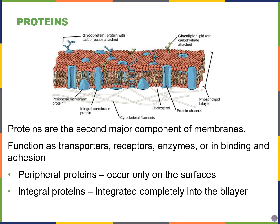Proteins are also an important component of membranes. They will have a variety of functions, including transporters that move things across the membrane into or out of the cell, protein receptors that bind to hormones to signal the cell to perform some kind of function, enzymes that speed up reactions, or proteins involved in adhesion, either to surfaces or to other cells. Of these proteins, there are two types: peripheral proteins and integral proteins.